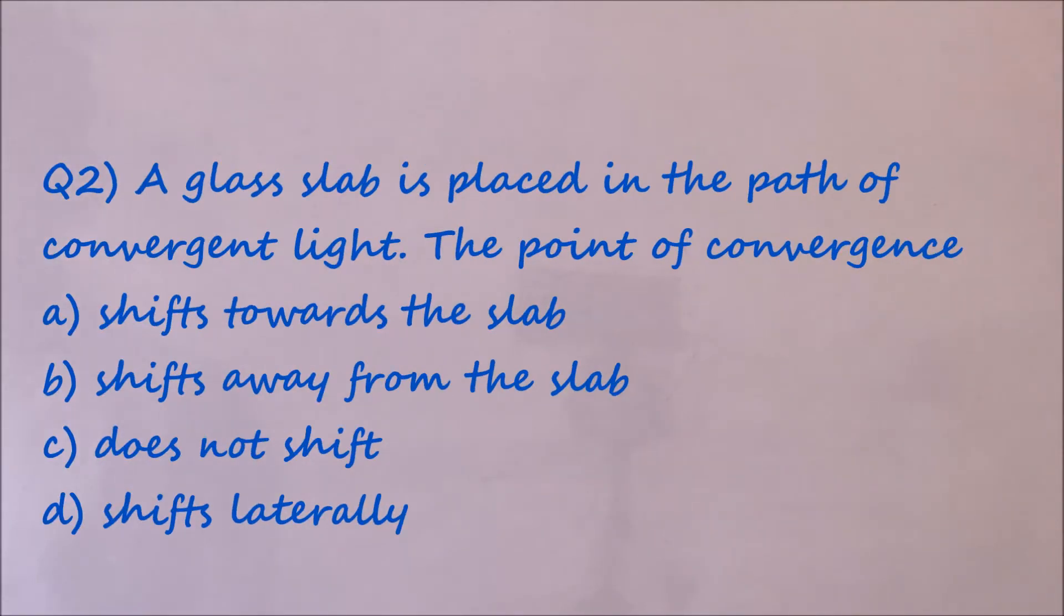Let's see the second question. Question number two: A glass slab is placed in the path of convergent light. The point of convergence: option A, shifts towards the slab; option B, shifts away from the slab; option C, does not shift; option D, shifts laterally. You can pause the video, think for some time and answer, then check the solution.